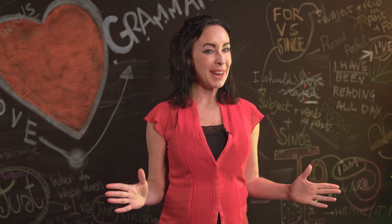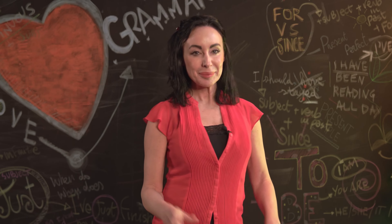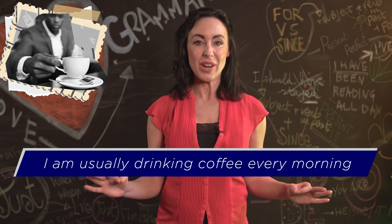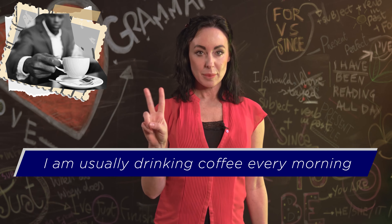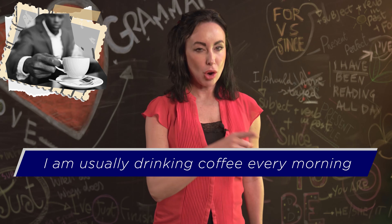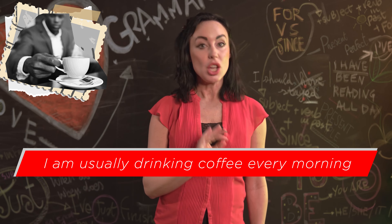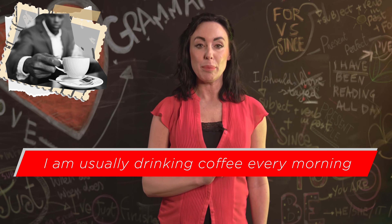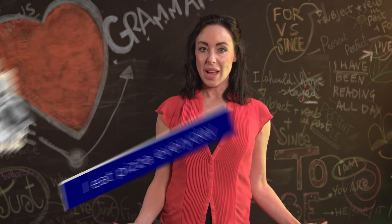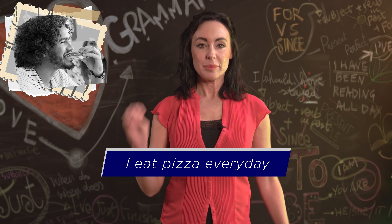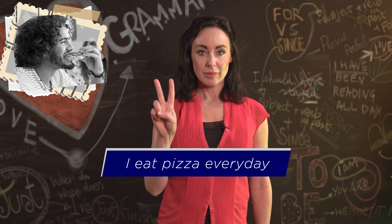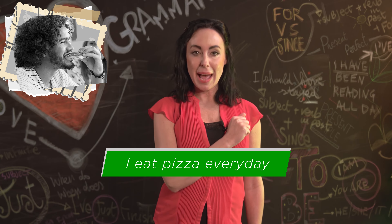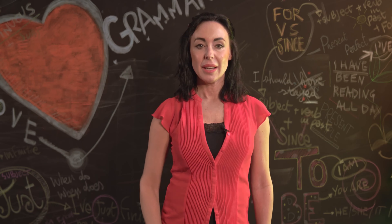And here we are with 'correct or incorrect.' Let's go. 'I am usually drinking coffee every morning' — incorrect. The adverb of frequency 'usually' means the action is a habit, so we need to use the present simple. Let's do another one: 'I eat pizza every day' — correct! The action is a repeated habit.